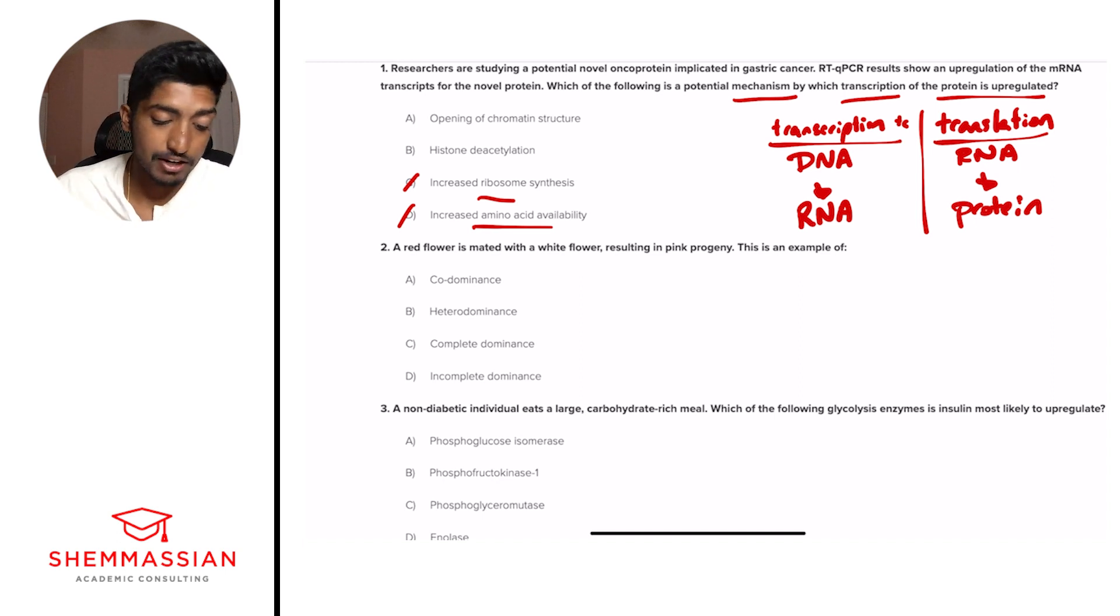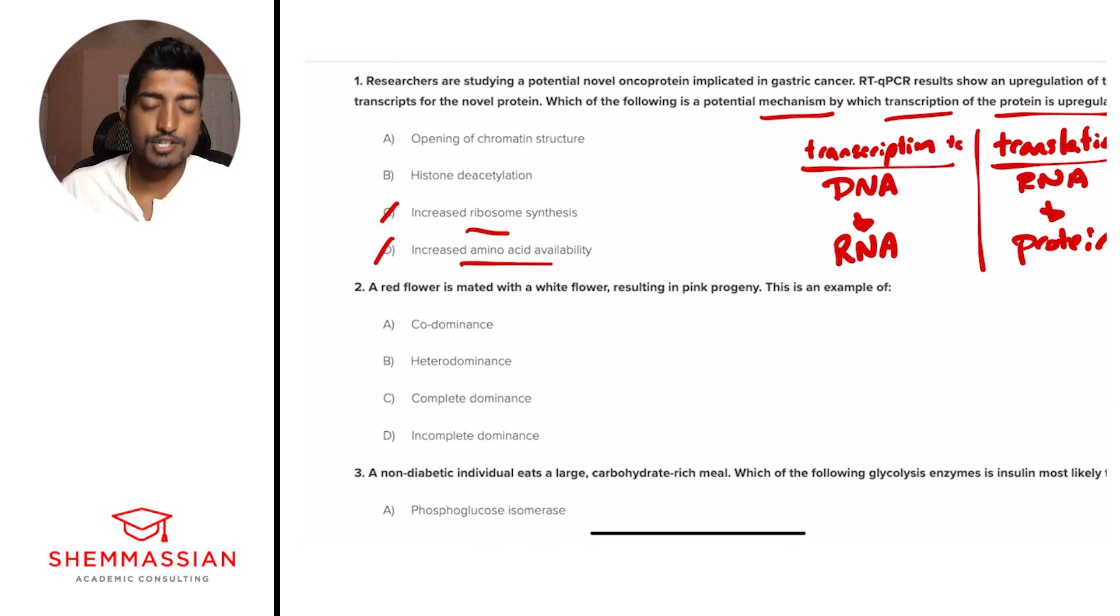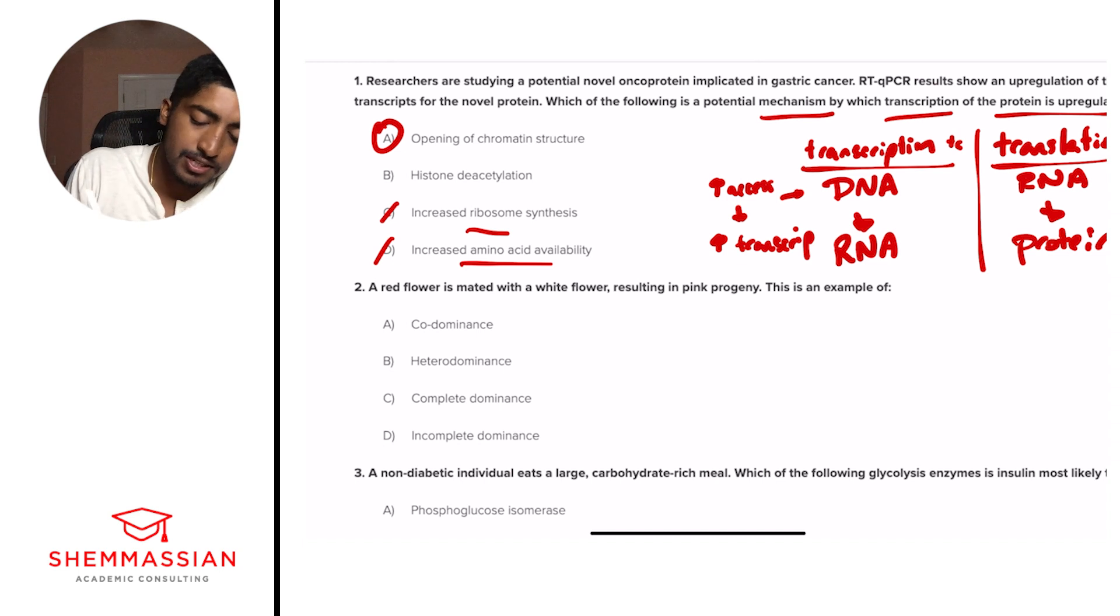We know it's down to A and B. So we should know that the way we increase transcription is we want more access to the DNA. That's the idea. Increased access to the DNA results in increased transcription. So there is an answer that looks pretty good right away. And that's A, opening of chromatin structure is how we have more access to the DNA. And so the way we do this is by these biological modifications of acetylation and methylation.